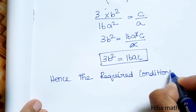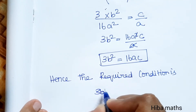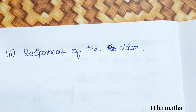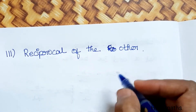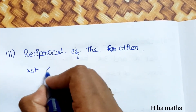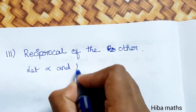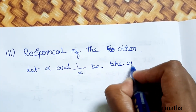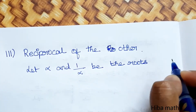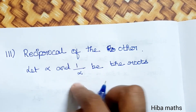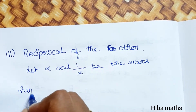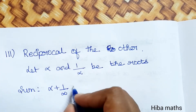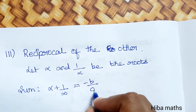Sub-case 3: One root is the reciprocal of the other. Let the roots be α and 1/α. Sum of roots: α + 1/α = -B/A, which gives (α² + 1)/α = -B/A.